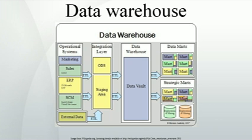Benefits of a data warehouse. A data warehouse maintains a copy of information from the source transaction systems. This architectural complexity provides the opportunity to congregate data from multiple sources into a single database so a single query engine can be used to present data. It helps mitigate the problem of database isolation level lock contention in transaction processing systems caused by attempts to run large, long-running analysis queries in transaction processing databases. It can also maintain data history, even if the source transaction systems do not, and integrate data from multiple source systems enabling a central view across the enterprise.